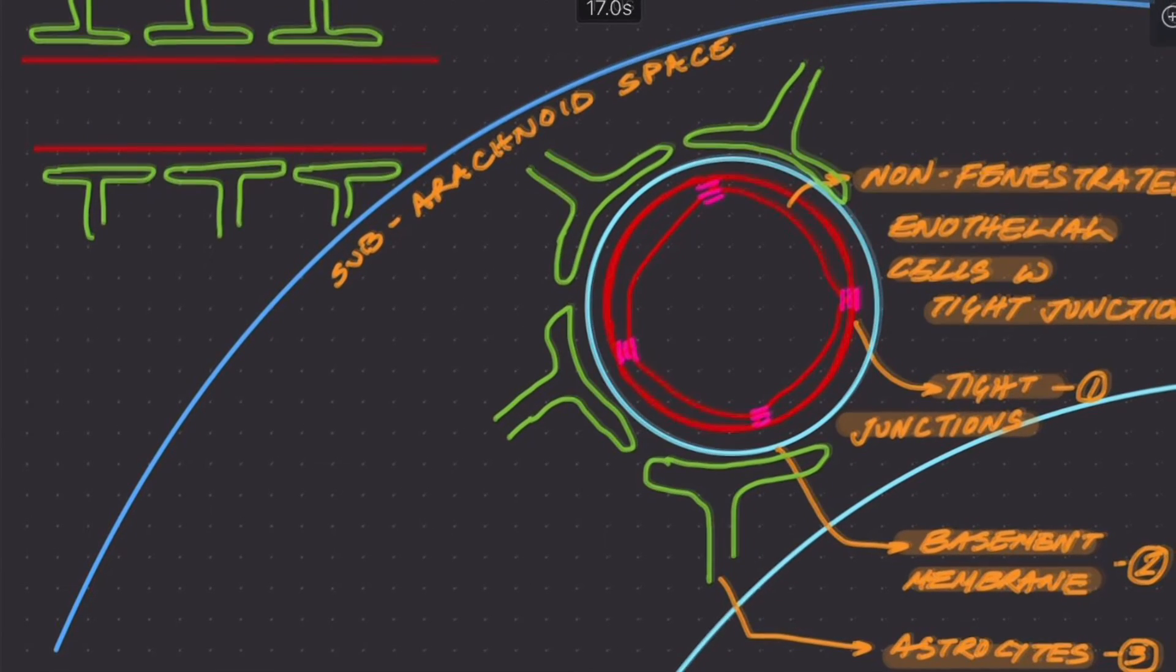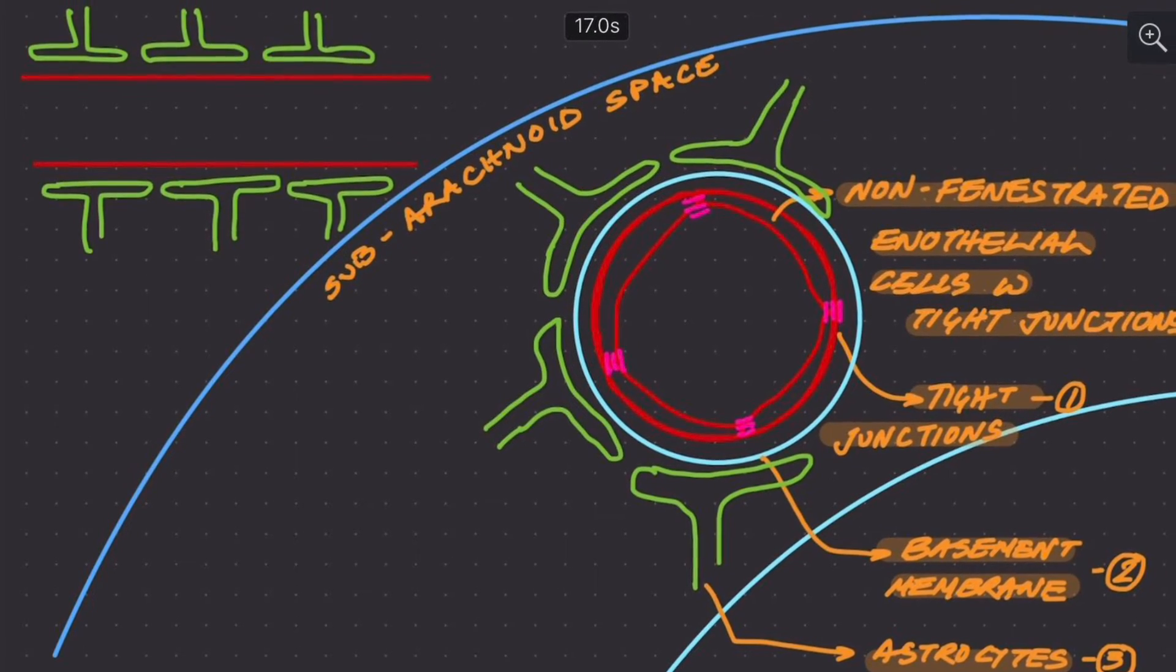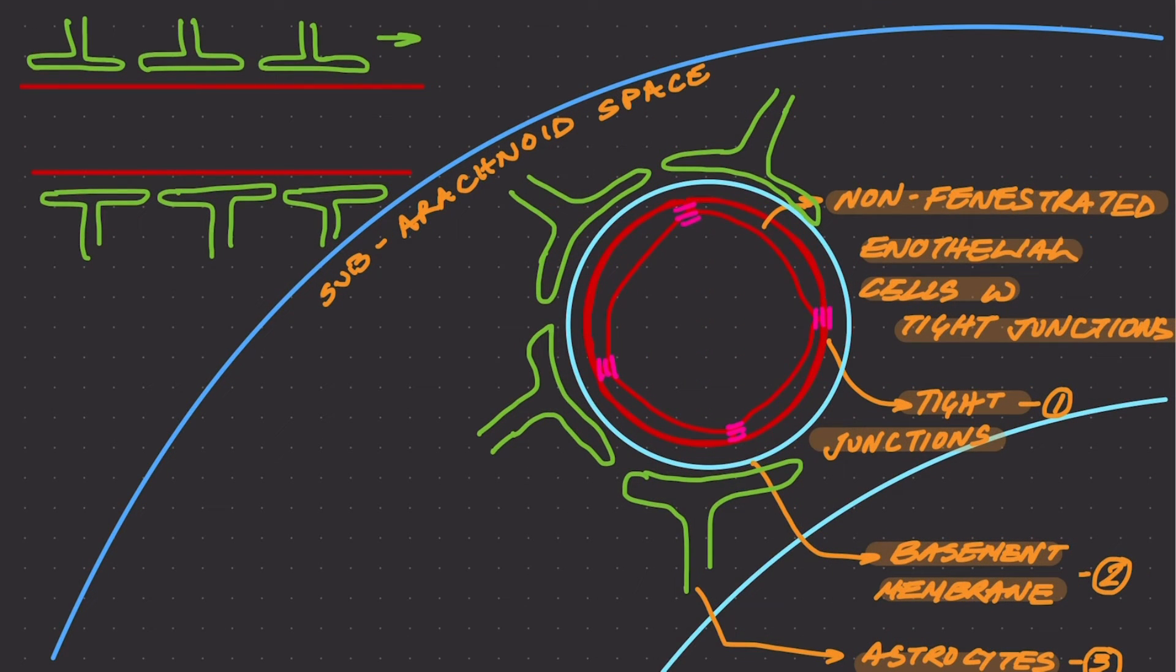I just want to clarify here that the presence of astrocytes lining the blood vessels in this way has nothing to do with eating up or destroying all the bacteria and viruses in the blood vessels. That's not the function of astrocytes.